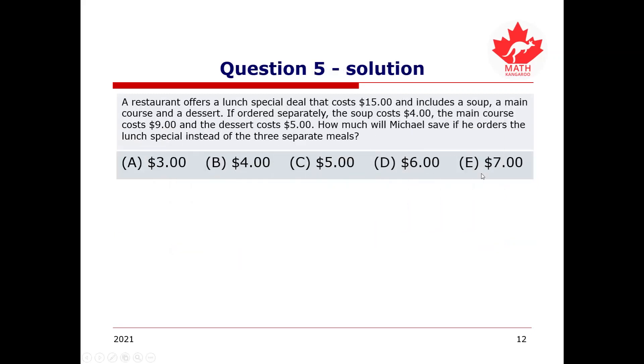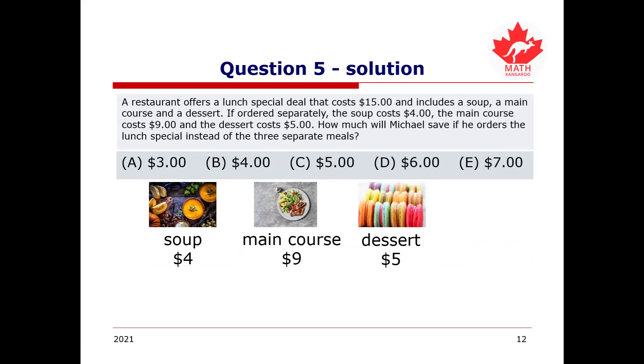So, first of all, it will help us if we can figure out how much it costs on total if the meals are all ordered separately. So, we know the price of each of the individual soups, main course, and the desserts by themselves. So, if we simply add these together, we can figure out that $4 plus $9 plus $5 will give us $18.